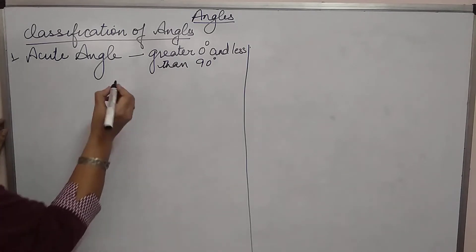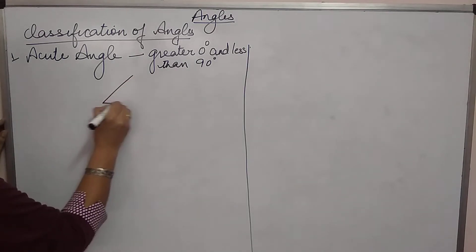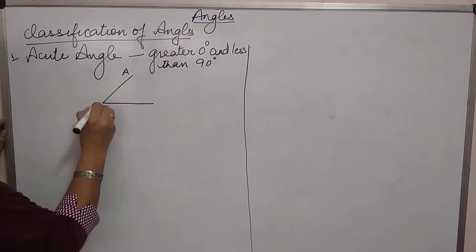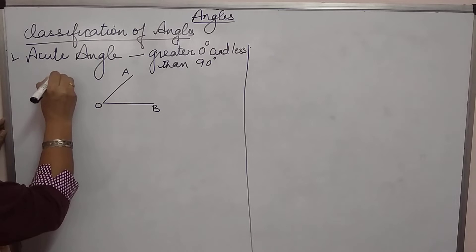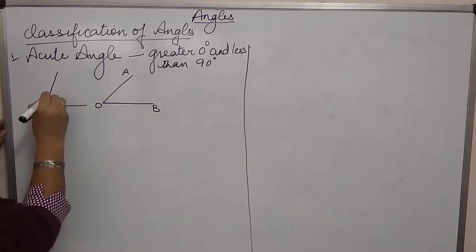So what is acute? Acute looks something like this. Looking at the shape of the angle, we can say it is acute. This is also acute.